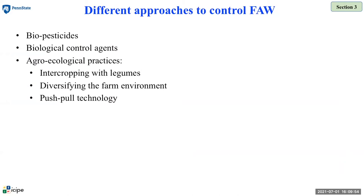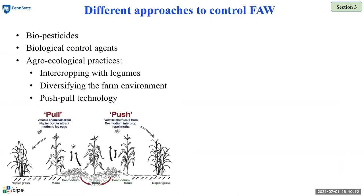Alternative control measures include the use of biopesticides, biological control agents, and agroecological practices such as intercropping with legumes, diversifying the farm environment, and push-pull technology. This push-pull technology was initially developed to control maize stem borer, and it is also effective to control fall armyworm.